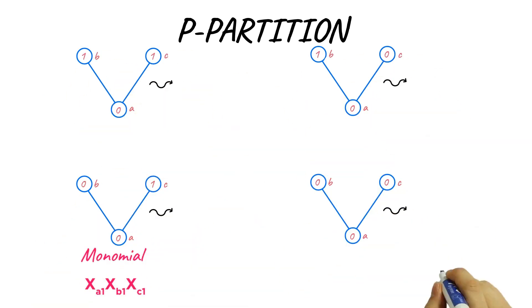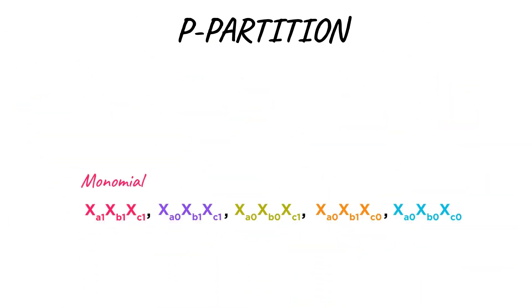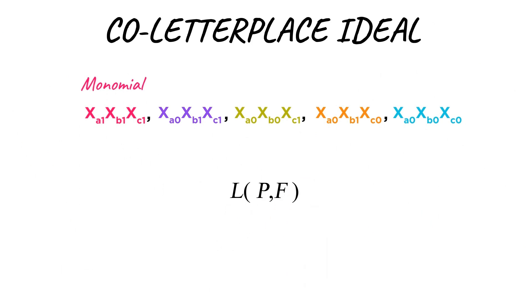These monomials generate the co-letterplace ideal in a polynomial ring. Its Alexander dual is the letterplace ideal.